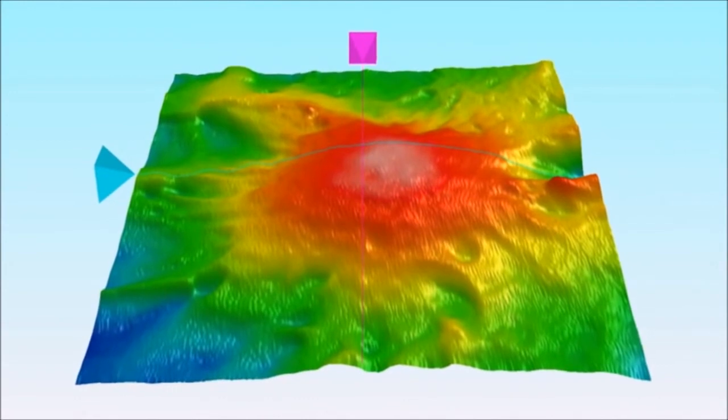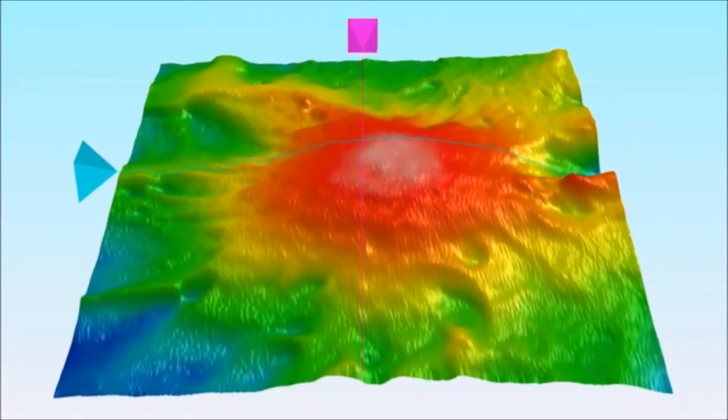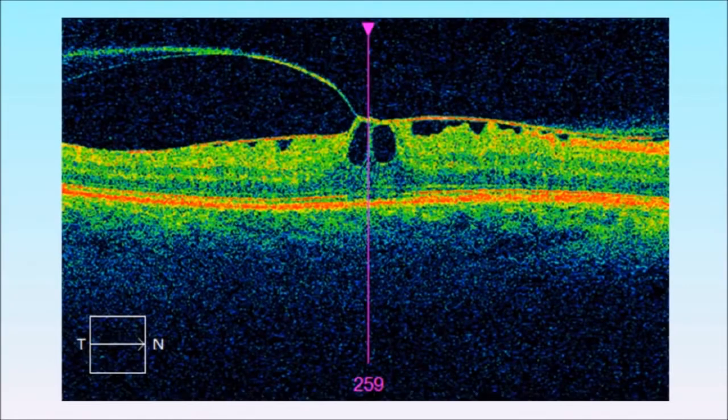This patient, shown in the next two images, has developed an epiretinal membrane on the retinal surface. As the membrane contracts, it causes distortion and cysts of fluid to form. This requires urgent surgical intervention.